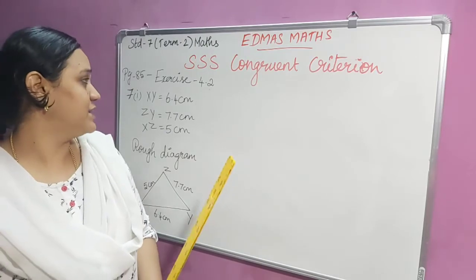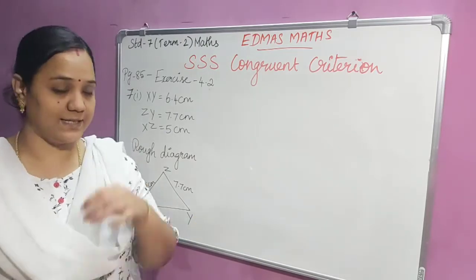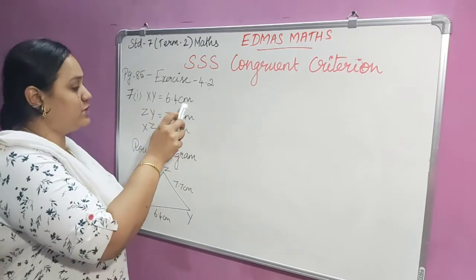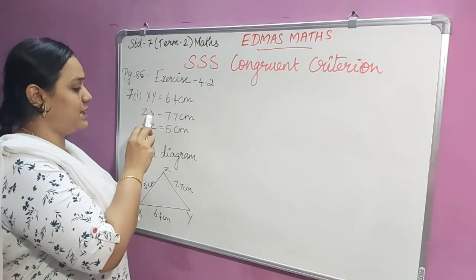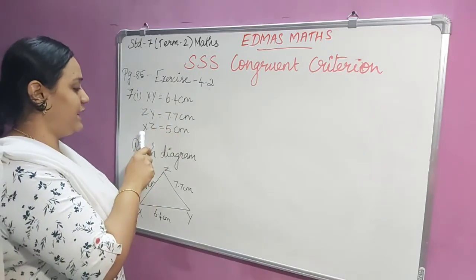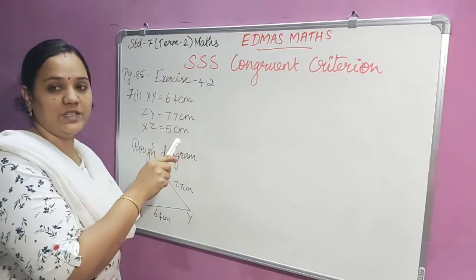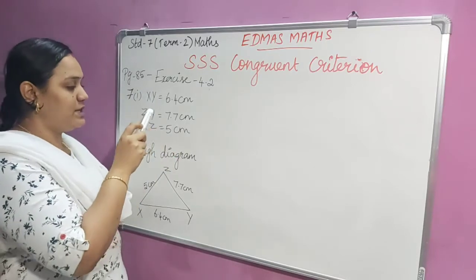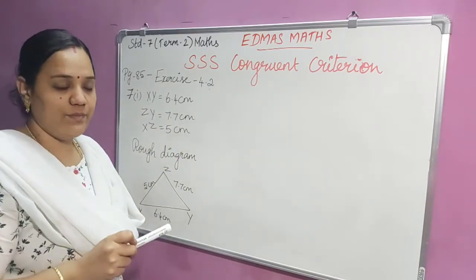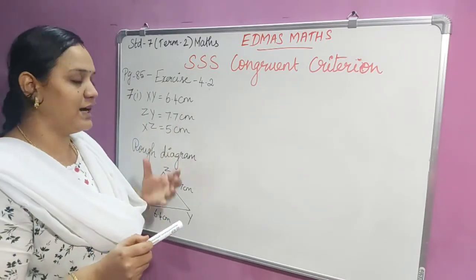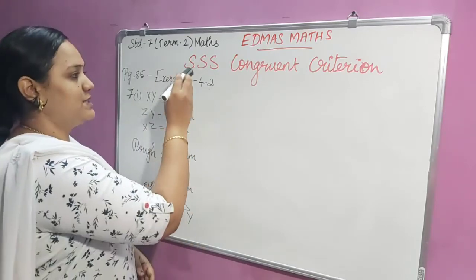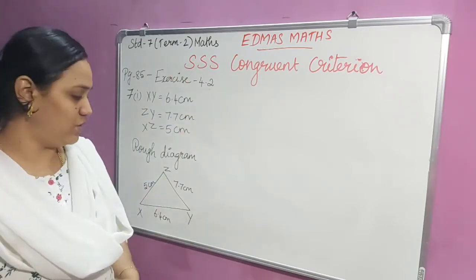Here the condition is SSS. XY is given as 6.4 centimeters, ZY is given as 7.7 centimeters, and XZ is given as 5 centimeters. So these three are line segments — we can say that these three are sides of a triangle. So it satisfies the SSS congruent condition.